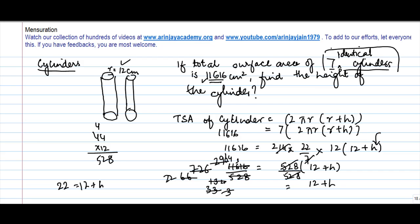We get 22 is equal to 12 plus h, or h is equal to 22 minus 12 is equal to 10 centimeters.